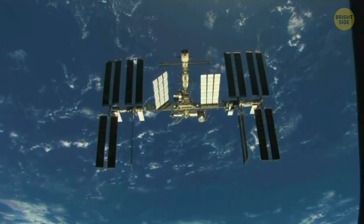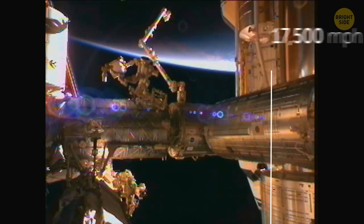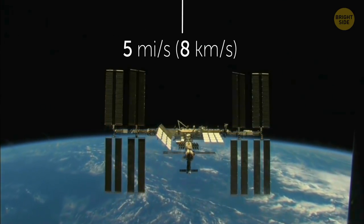The International Space Station circles our planet every 92 minutes. It orbits the Earth at 17,500 miles per hour. That's nearly 5 miles per second.